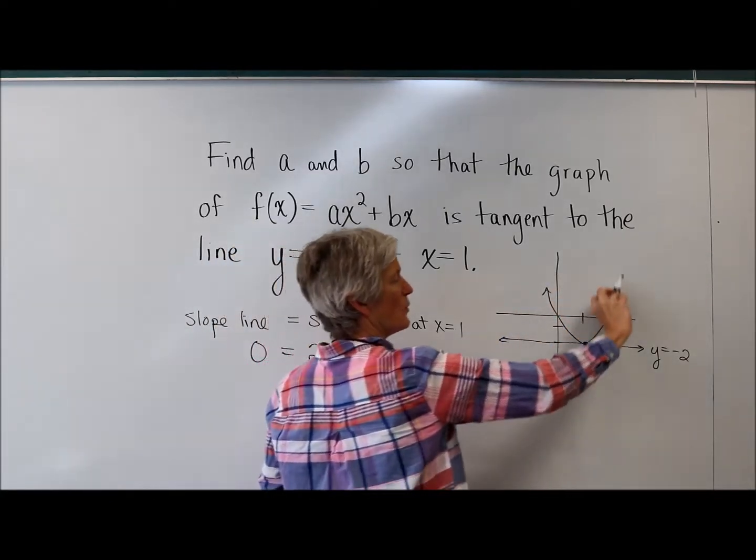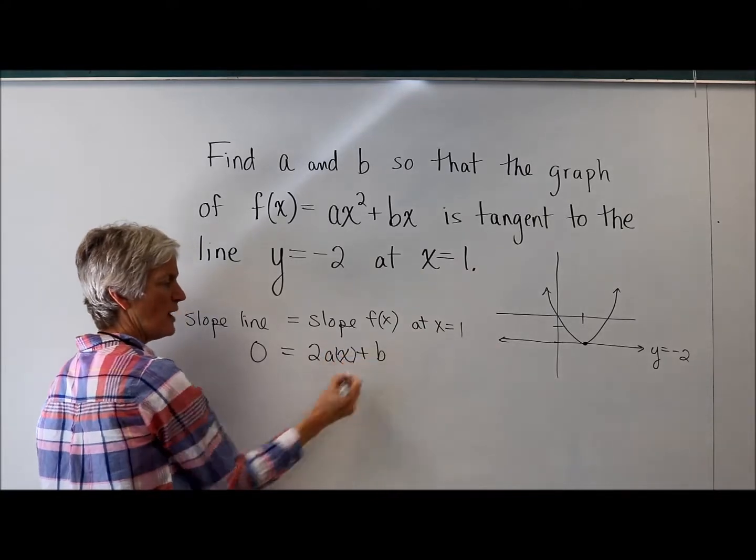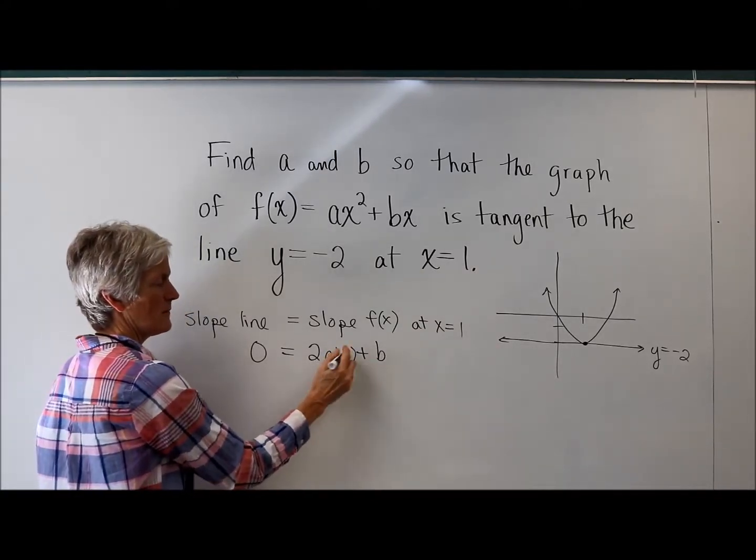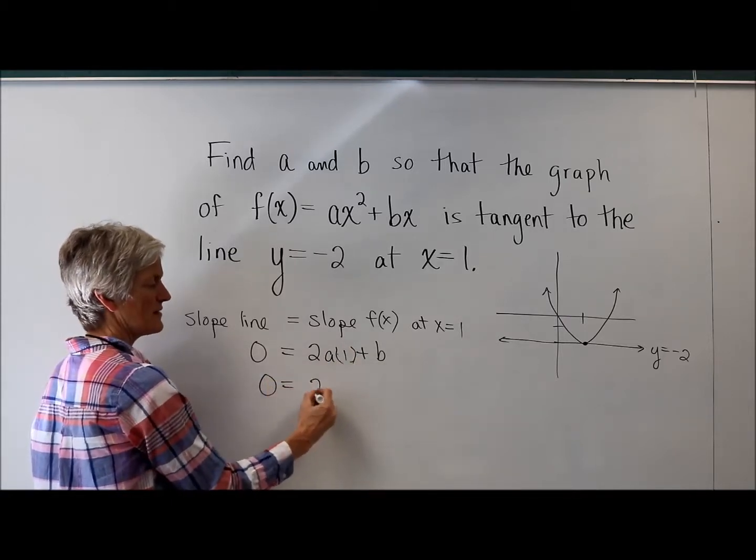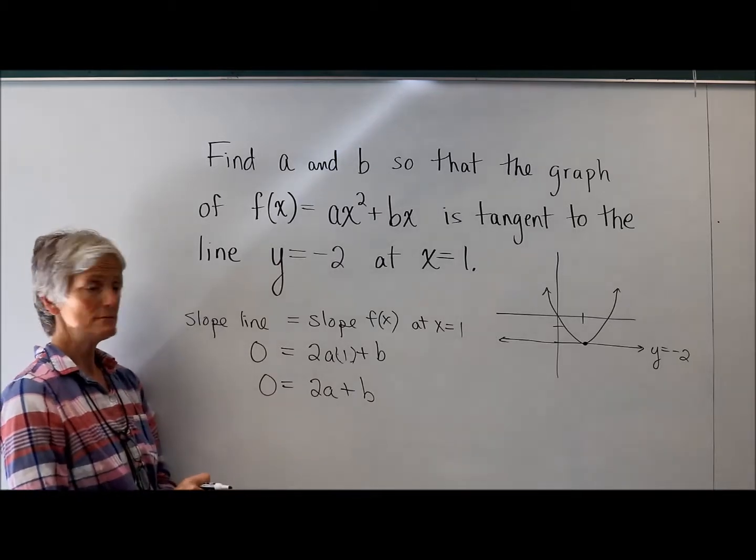So I know this is true at x equals 1. Obviously, the slope of the parabola is not always 0. So I need to substitute in a 1 for that x. So that looks like 2a plus b equals 0. Sure. All right.